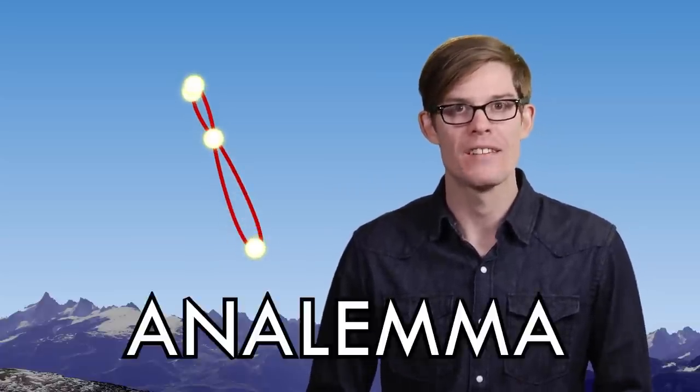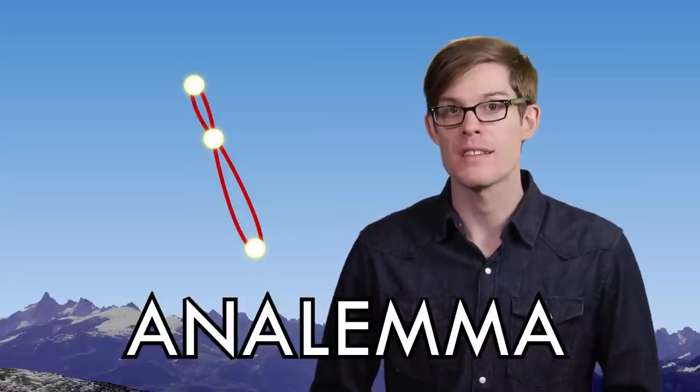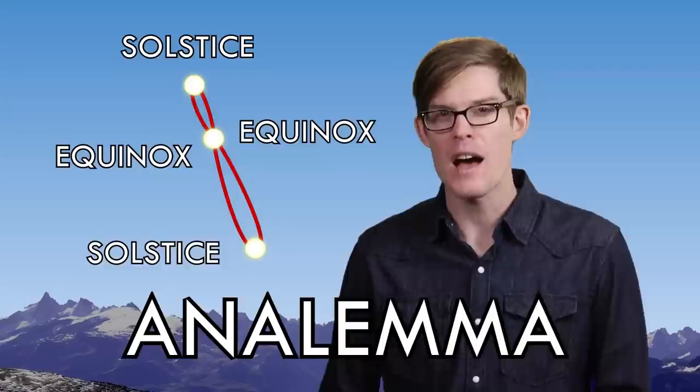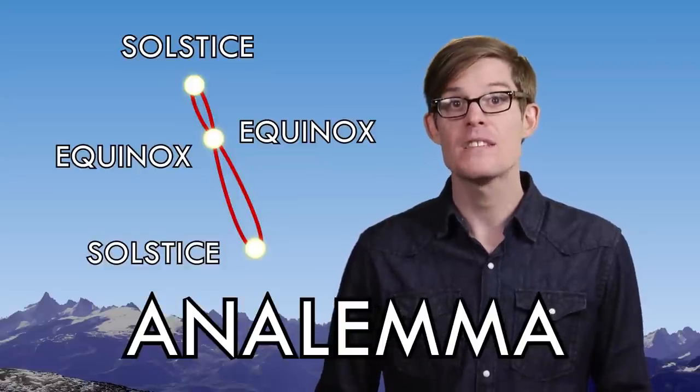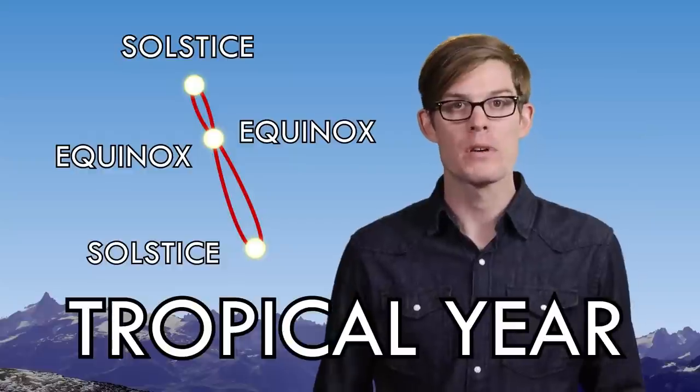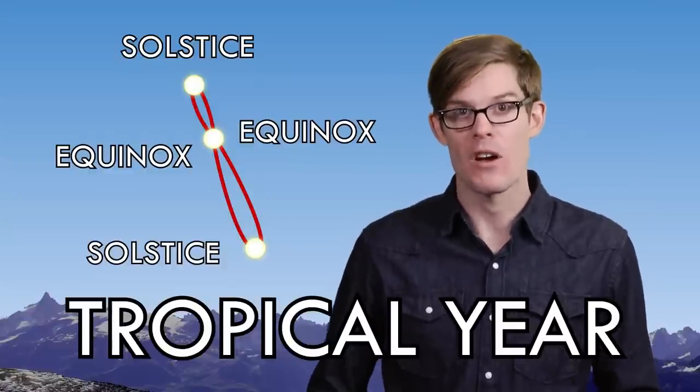If we track the position of the Sun in the sky every day, it makes this awesome shape called an analemma, with two solstices at the top and bottom and two equinoxes. If we measure the amount of time between two equinoxes, it ends up being 21 minutes shorter than a sidereal year. We call that a tropical year, and that's what we base our calendar on, at least here in the West.